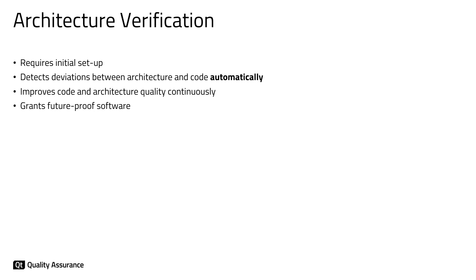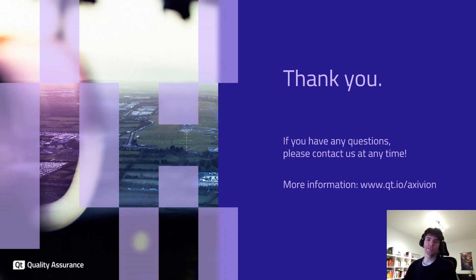To sum up, we have seen that architecture verification requires an initial setup of four steps. Once set up, it can detect deviations between architecture model and code model automatically. It improves code and architecture quality continuously, detects flaws, and assures that the architecture remains reliable, helping to build future-proof software. Thanks a lot for your interest in architecture verification. If you have any more questions or would like additional information, please contact us at any time. You can also find information on our website. Thanks a lot again and have a great day.